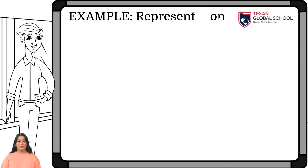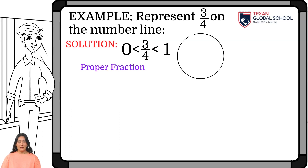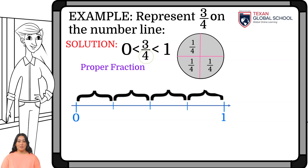Let's look at another example. Represent 3 fourths on the number line. We can see that it is a proper fraction since the numerator is less than the denominator. Therefore, the quotient will be greater than 0 and less than 1. Create a model of the fraction, separating the whole into 4 parts. We can see that 3 of the parts represent 3 fourths. So, to represent this fraction on the number line, we know that it will be between 0 and 1. Since the fraction has 4 as denominator, separate the segment into 4 equal parts.